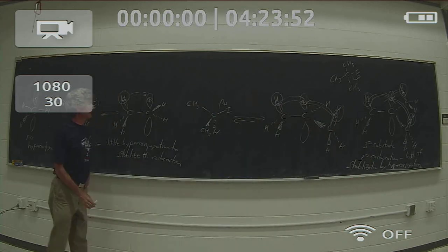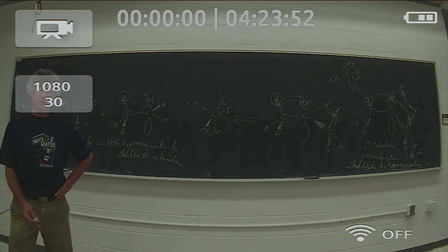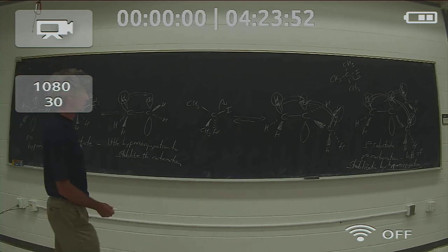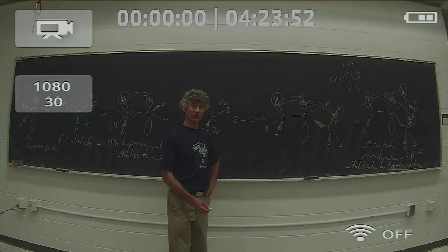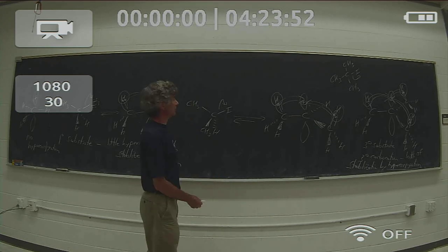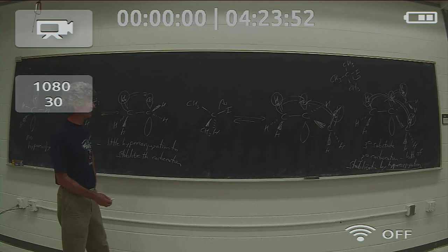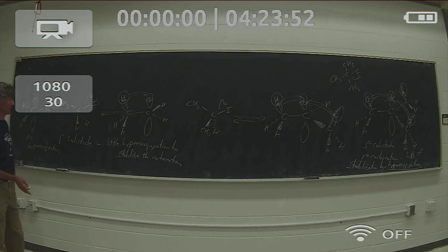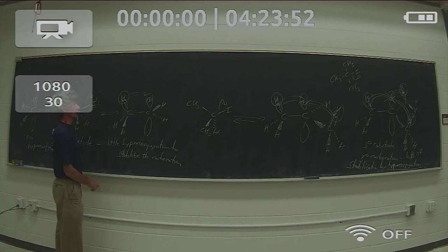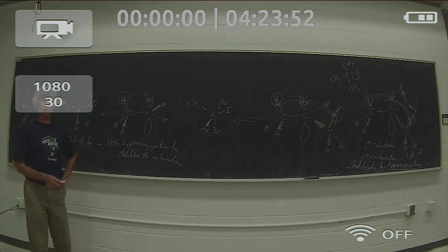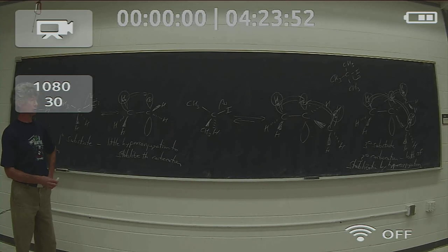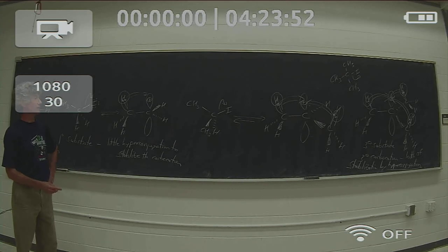The key to understanding why the tertiary substrate is slower in the SN2 reaction than the primary substrate is sterics — increasing steric hindrance to the approach of the nucleophile as we go from primary to secondary to tertiary. And the key to understanding why the SN1 reaction rate is enhanced as we go from primary to secondary to tertiary is hyperconjugation — greater hyperconjugative stability of the carbocation as we increase the number of adjacent C–H sigma bonds that can donate electron density into the empty p orbital to stabilize the positive charge.